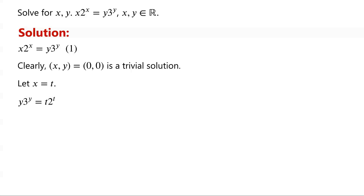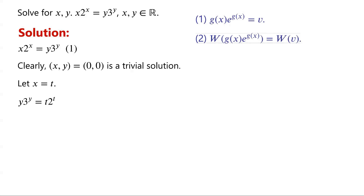We can solve the equation using the Lambert W function. The first step is to transform the equation into the form g(x) times e to the power of g(x) equals a constant v, where v is an expression independent of x. The second step is to apply the Lambert W function to both sides. By definition, W of g(x) times e to the power of g(x) equals g(x). The final step is to solve for x in the equation g(x) equals W(v).